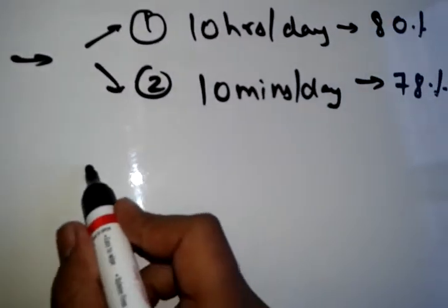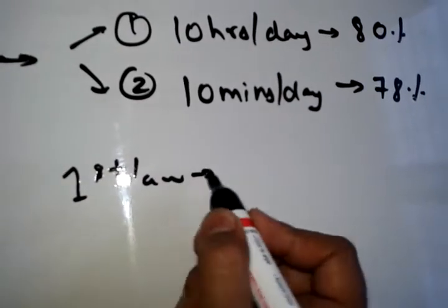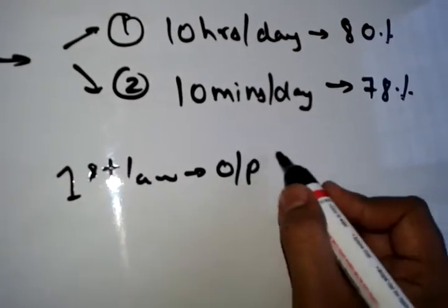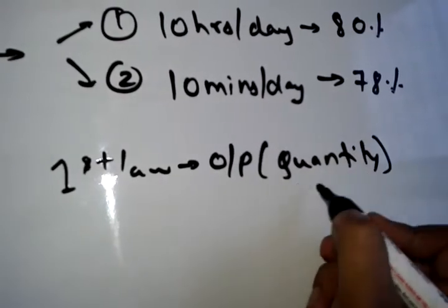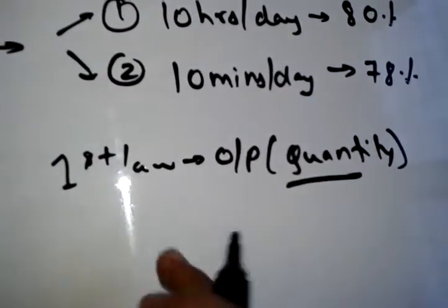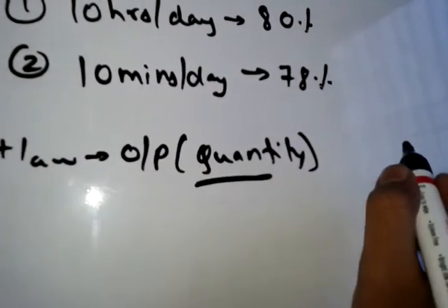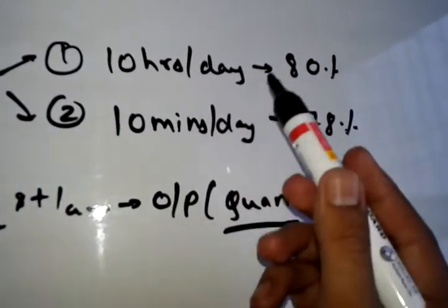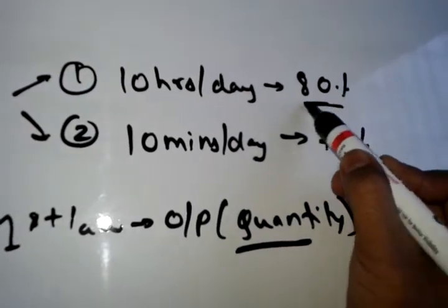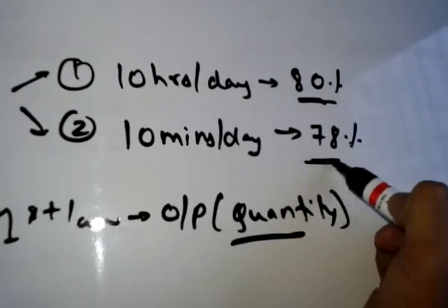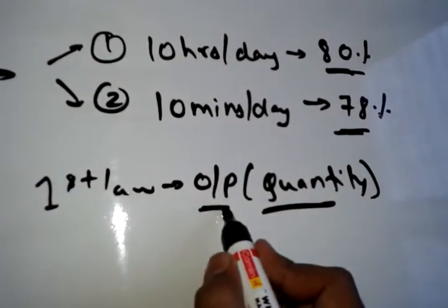Now if you see the first law — the first law only sees output. It only worries about quantity. This is the crux of the issue: the first law only cares for quantity, not quality.